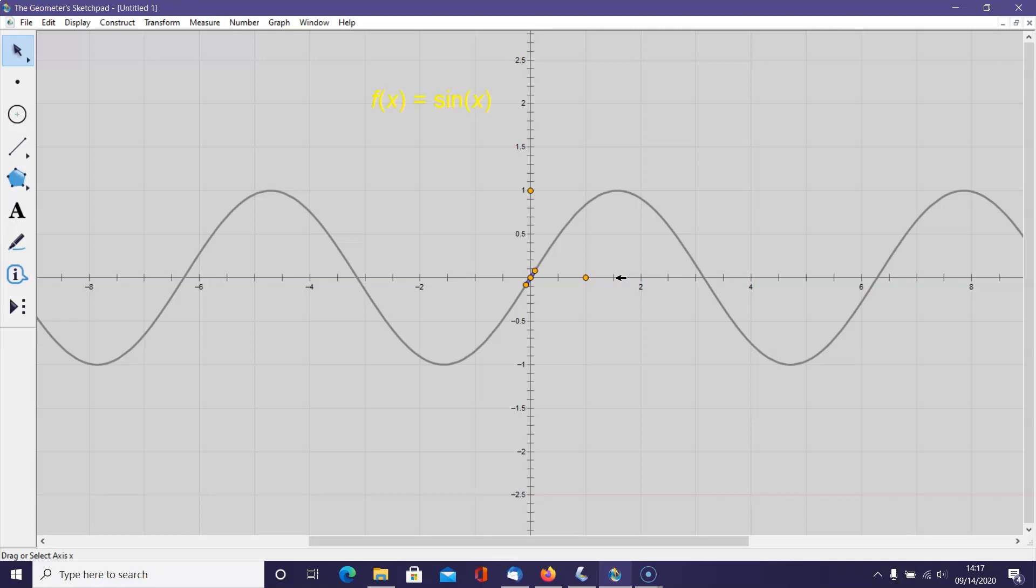The problem with inverse functions is, you notice, if I come all the way across, there are actually lots of locations where the sine curve is at positive 1 half. But your calculator has to give you an answer, and it doesn't know which answer to give. So we limit the scope of what we're going to look at when we do inverse trig functions.